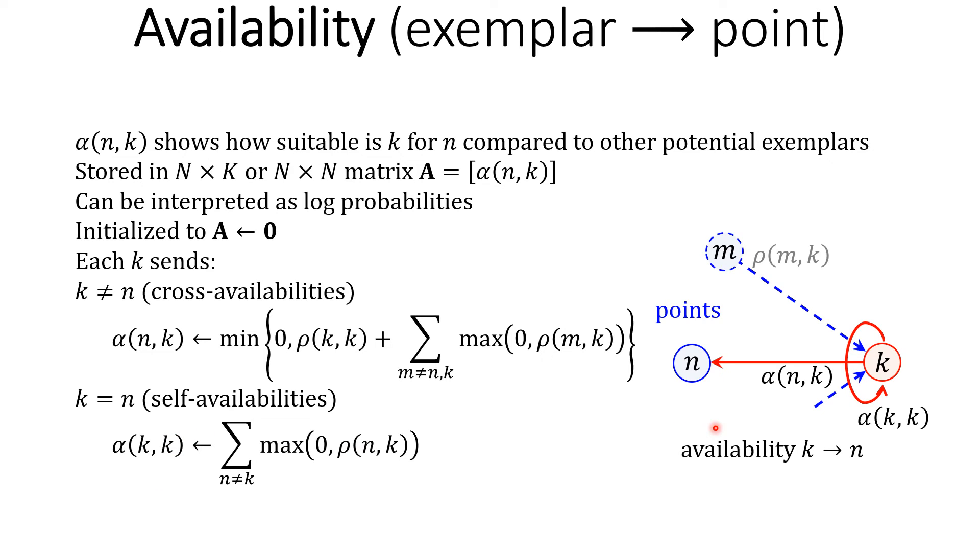And there is also self-availability alpha_kk which the potential exemplar k retains, that is sent to itself, and that is given by this expression here.